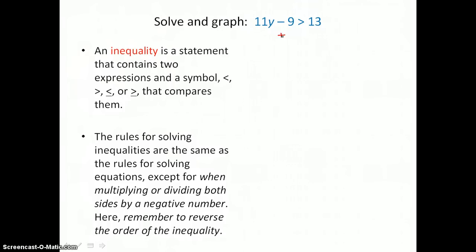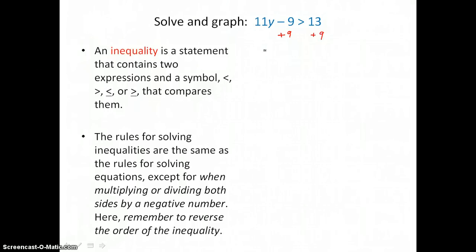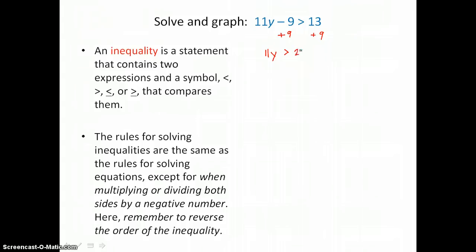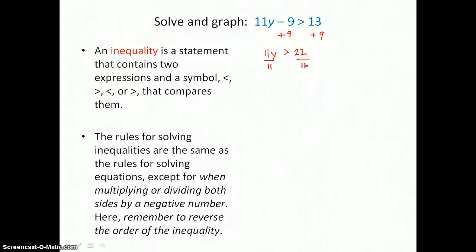We're going to start by moving that 9 to the other side of the inequality. We'll add 9 to both sides in order to leave our y term. On the left, 11y is greater than 13 plus 9, which is 22. And then the last step is dividing both sides by this positive 11, so we're left with y is greater than 2.